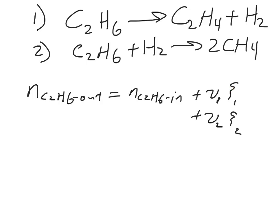So in this case, extent 1 tells us how far along reaction 1 has proceeded. Extent 2 tells us how far along reaction 2 has proceeded. And the stoichiometric coefficients here are simply the numbers in the equations. Again, negative for reactants, positive for products.